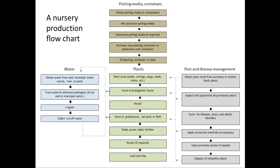Here's an example of a flow chart for a nursery operation — you'll want to make one for your own production system. This one has been broken down into potting media and containers, plants, pest and disease management, and water. Water really is involved in many aspects of the nursery and we'll talk about that in a moment.